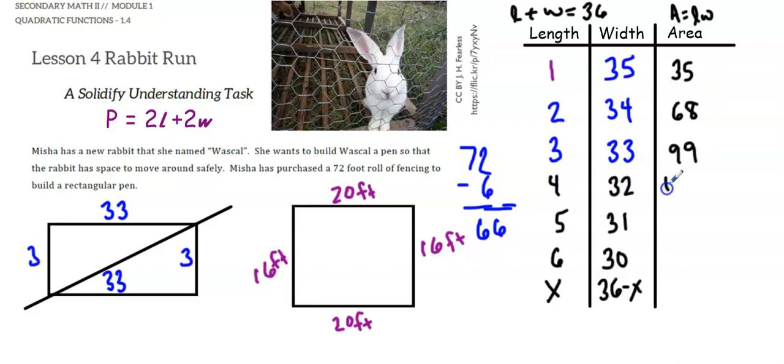4 times 32 is 128. 5 times 31 is 155. 6 times 30 is 180.